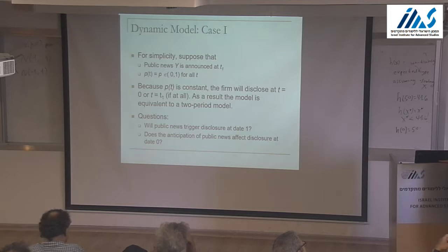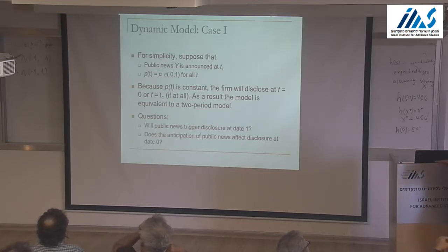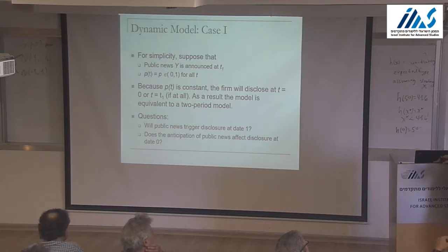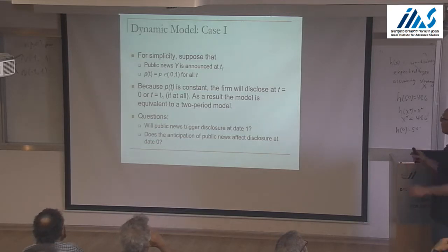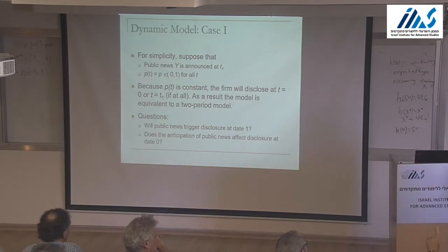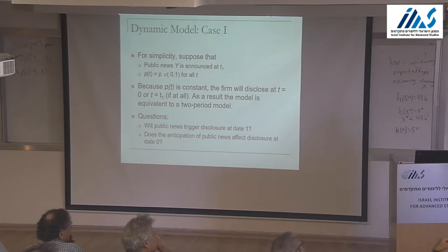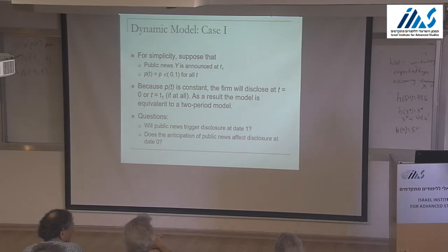Either you disclose before the external information or after — there's no point disclosing a day before. So this is a dynamic but effectively two-period model. You get information about S at the beginning with probability P — either you get it or you don't. The public news Y is announced at a known time, but you don't know its value. If you know S, you update your belief about Y using the joint normal distribution. Your payoff is an average stock price across time, so you are sensitive to intermediate stock prices — perhaps because you're selling stocks over time or because past prices affect your labor market value.